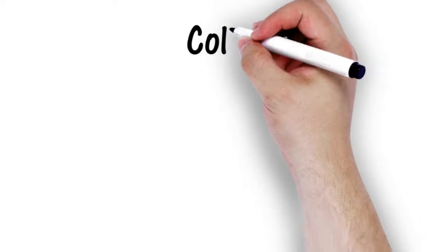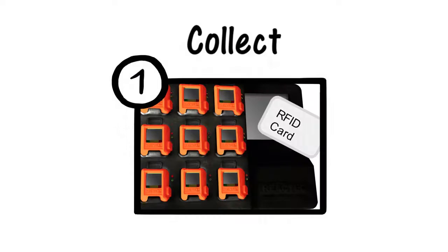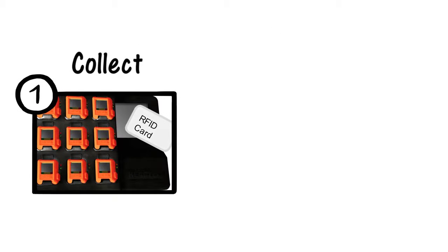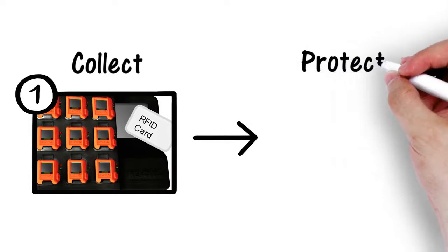Each operator uses a personalized RFID card containing their exposure action level thresholds to sign out a Havware from a docking station at the start of their shift. The Havware device is placed into a wrist strap and fitted snugly onto the wrist.